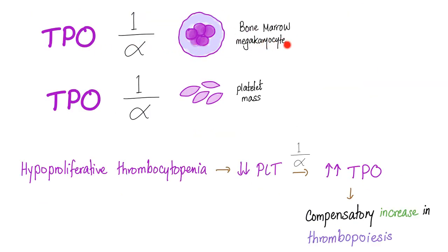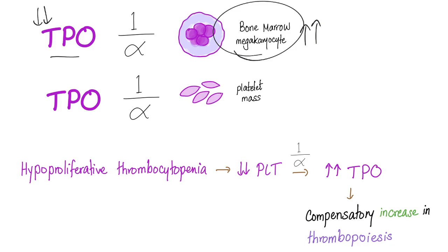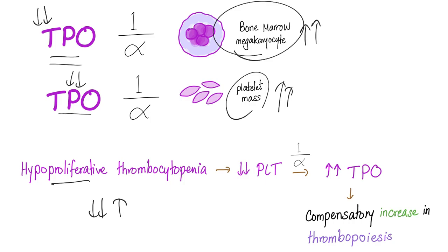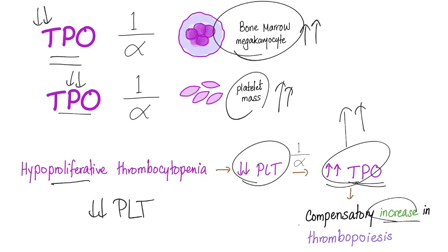T-Po is inversely related to bone marrow megakaryocytes, and T-Po is inversely related to platelet mass. When you have lots of megakaryocytes, you will have less T-Po — this is called negative feedback. Same thing when you have lots of platelets; you will decrease T-Po. On the other hand, when you have hypoproliferative thrombocytopenia with decreased platelets, T-Po is going to rise, causing a compensatory increase in thrombopoiesis, trying to increase the platelet count back to normal.